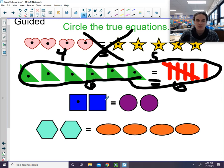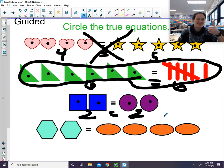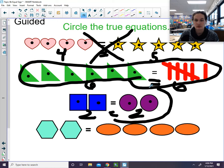Let's look at this one. One, two equals one, two. True equation or not? It is a true equation. Two is the same as two. So we will circle it.